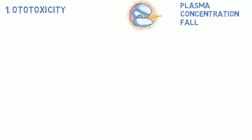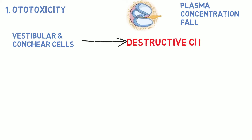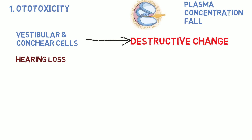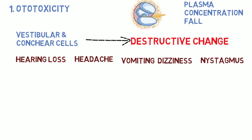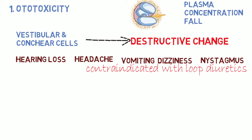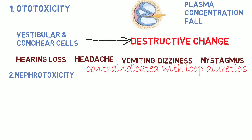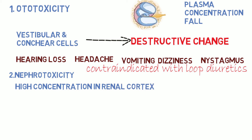When there is high plasma concentration of the drug, vestibular and cochlear sensory cells and hairs undergo concentration-dependent destructive changes, leading to progressive hearing loss and symptoms such as headache, nausea, vomiting, dizziness, and nystagmus. Aminoglycosides are contraindicated with loop diuretics since they are also ototoxic.